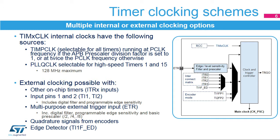The TI1-FED edge detector input can also be used as the timer clock. A pulse is generated on both rising and falling edges of the TI1-F signal. Although it was not intended for this, it can serve as a frequency doubler with an external clock, meaning it counts twice per incoming clock period. Lastly, the quadrature signals from the encoder can be processed to provide a clock and a counting direction, as described later in this presentation.